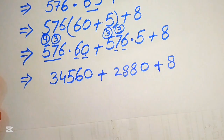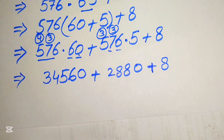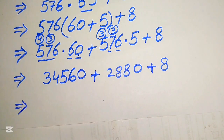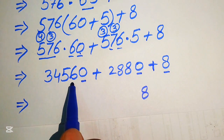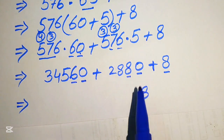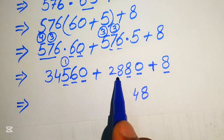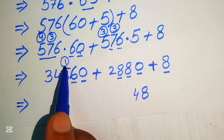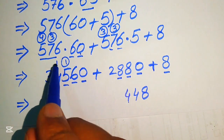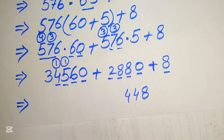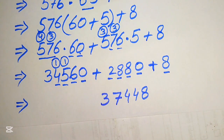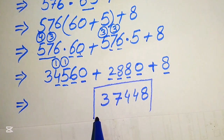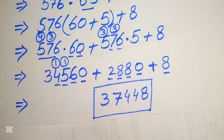Now we add all of these values: 0 plus 0 plus 8 equals 8; 6 plus 8 is 14, write 4 carry 1; 5 plus 8 is 13 plus 1 is 14, write 4 carry 1; 4 plus 2 is 6 plus 1 is 7; and we have 3. So the final simplified answer is 37448. Thank you so much for watching this video — please subscribe to my channel for more exciting videos.